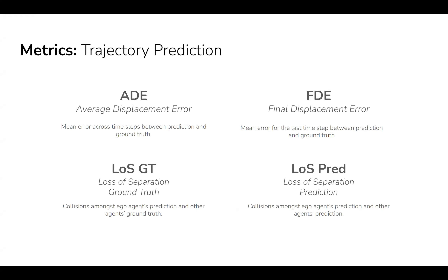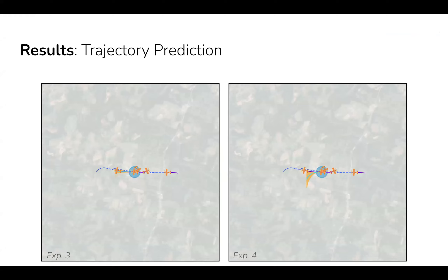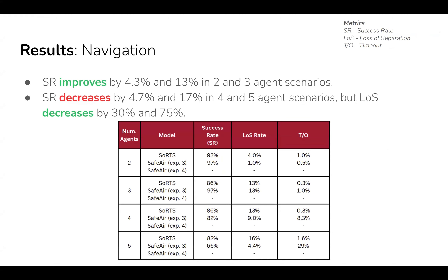As a result, the metrics are average and final displacement error, and loss of separation between the ego agent's prediction and other agents' ground truth and predictions. When applying the SAFER split to the safety-naive model, loss of separation worsens, but when the remediation techniques are applied, it improves — though displacement error performance drops by 20%. This example shows how the safety-informed model tries to evade the agent in front of it. For navigation, the metrics are success rate, loss of separation, and timeout. The safety-naive model success rate improves with two and three agents, but decreases in scenarios with four and five agents — out-of-distribution scenarios — though loss of separation also decreases, which is good.